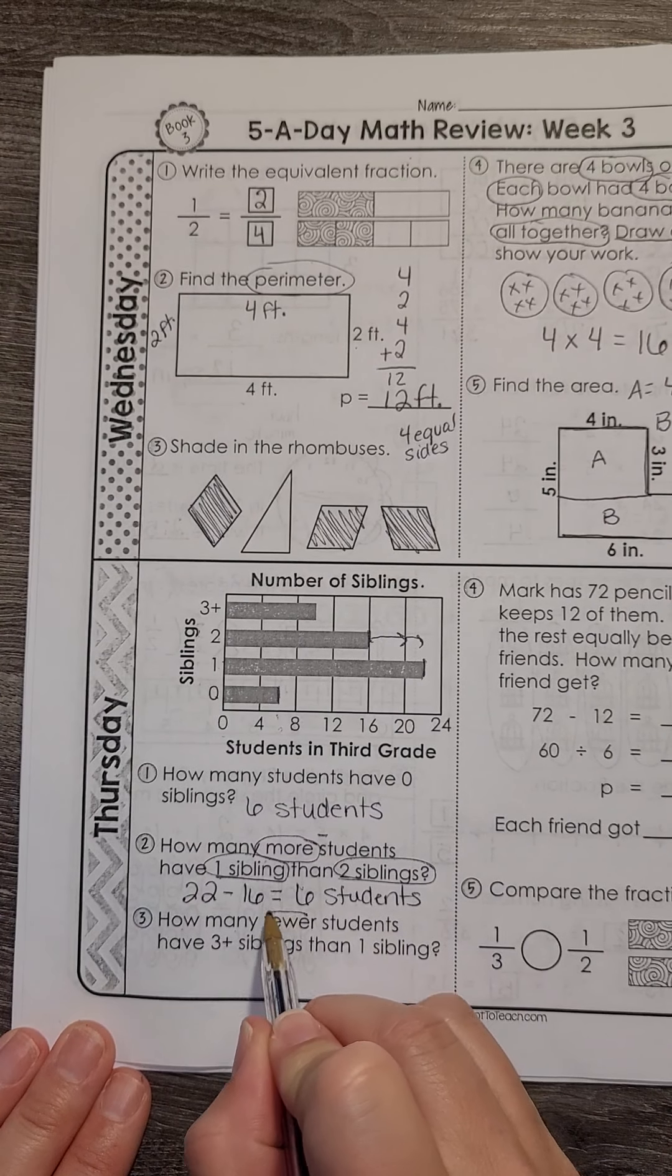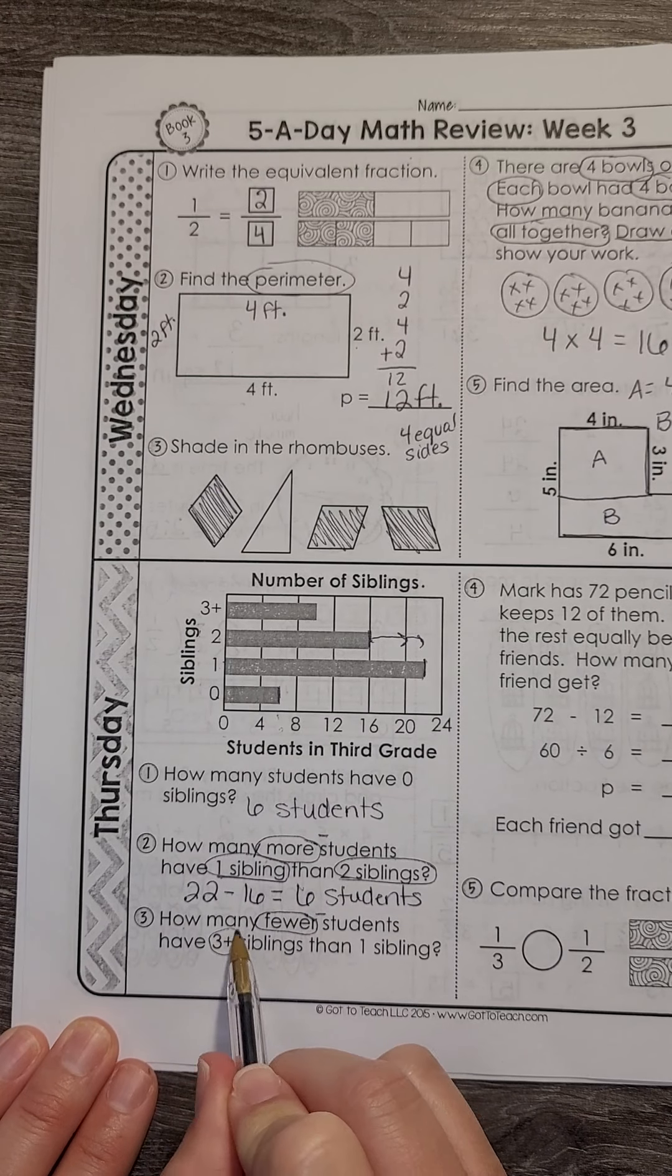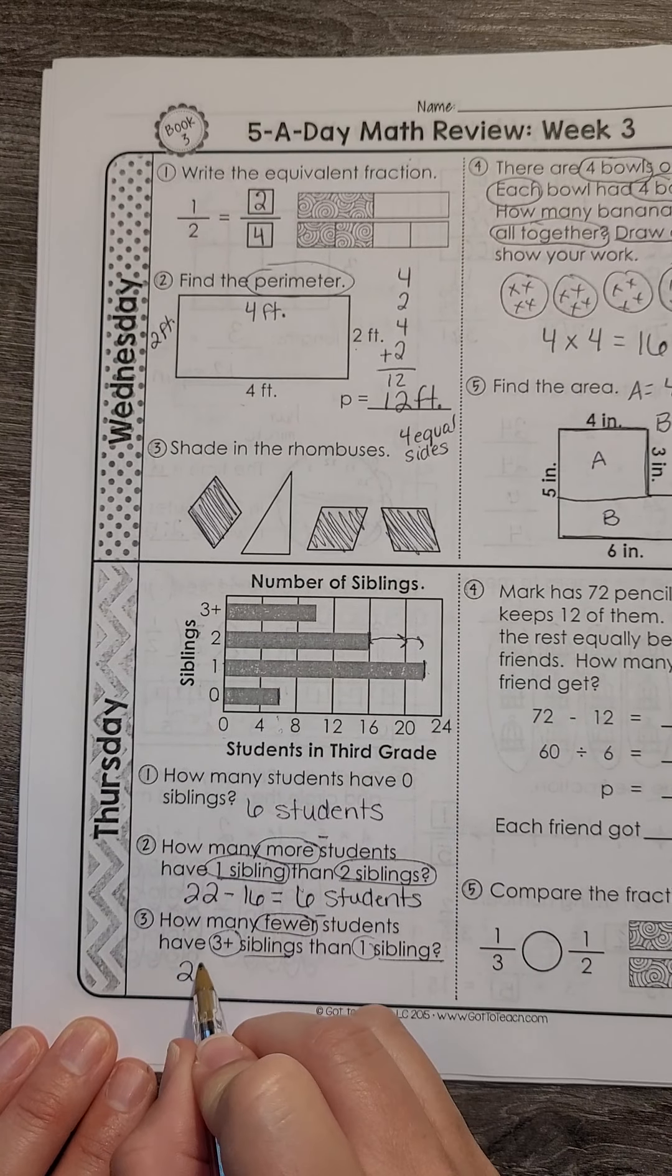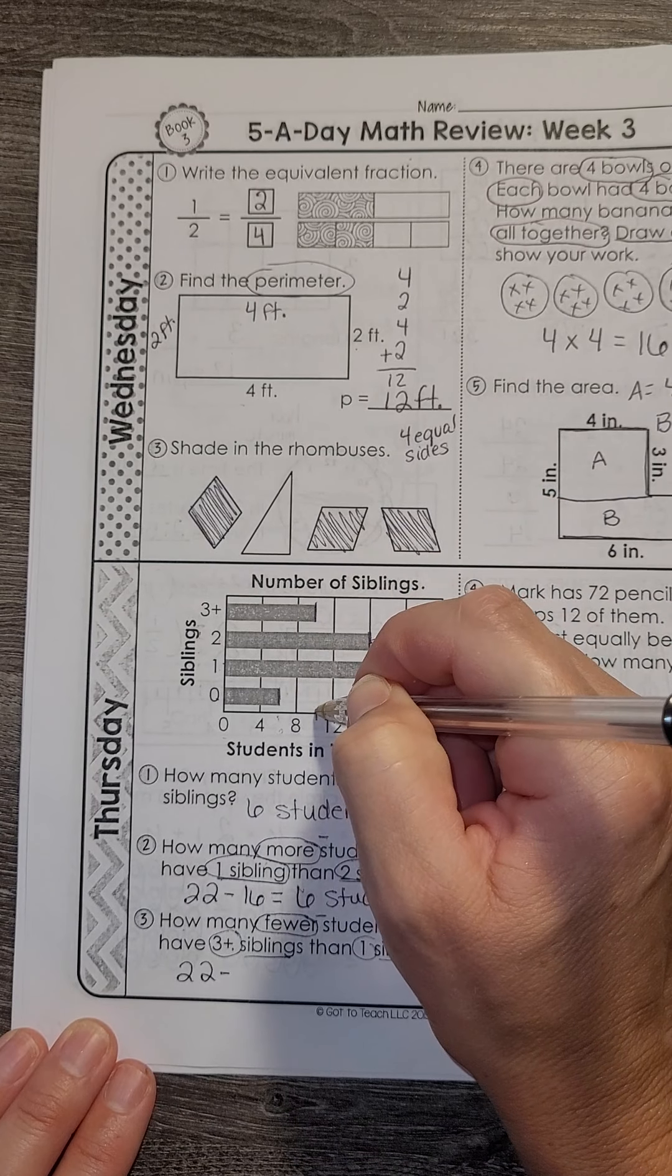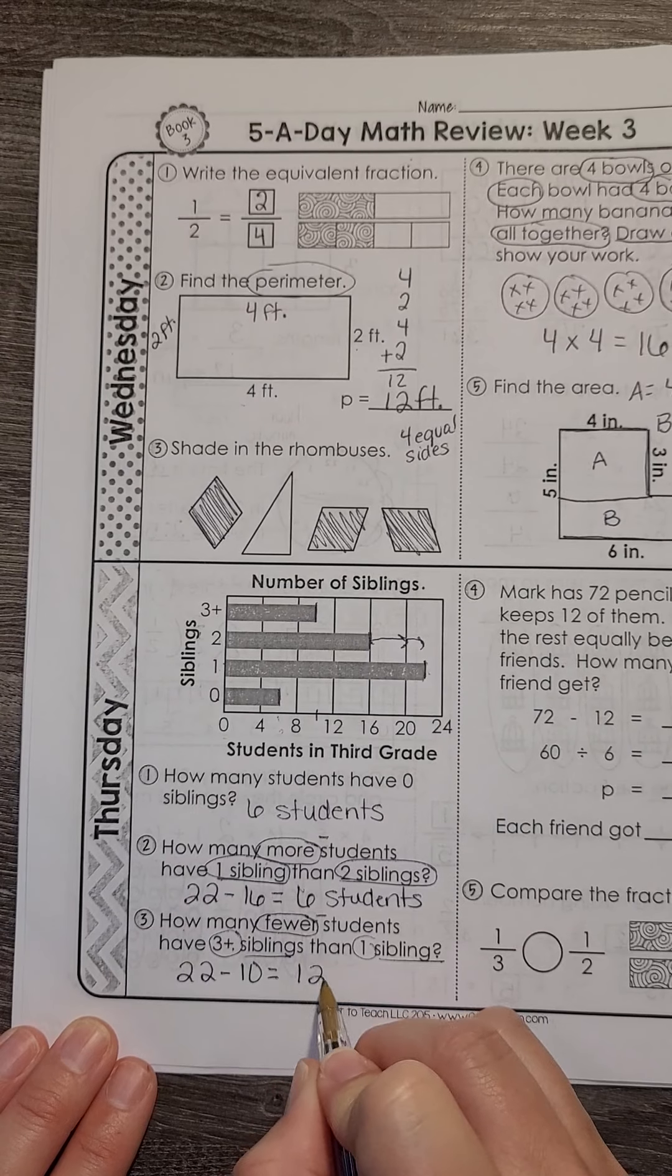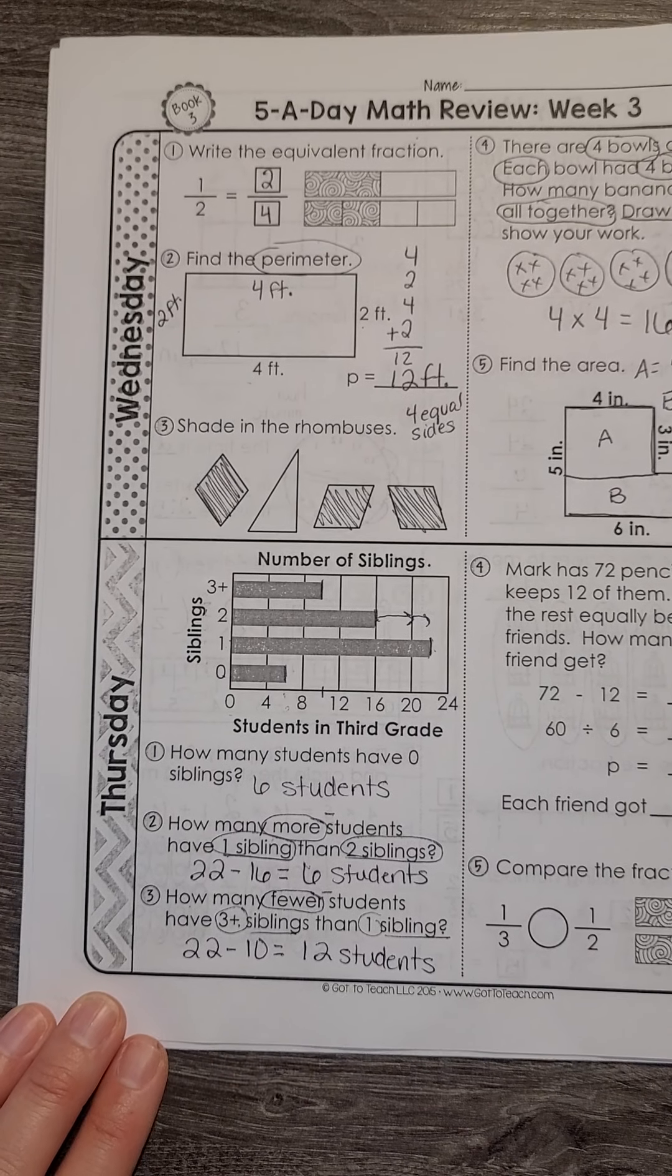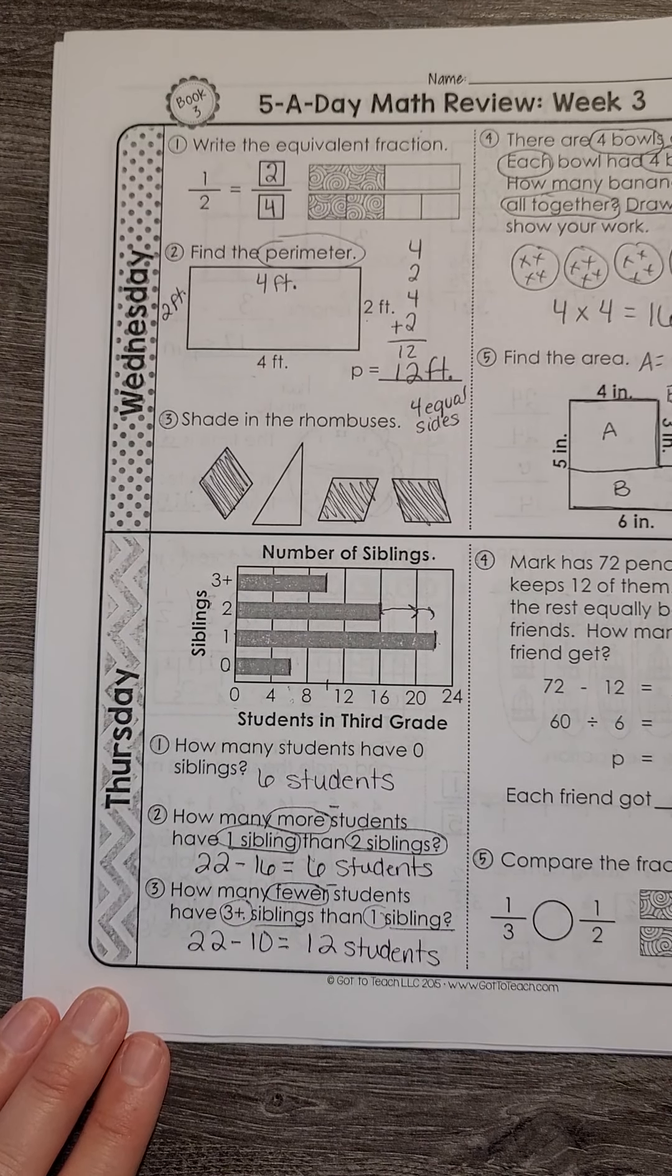How many fewer students, subtraction, have three plus siblings than one sibling? So we know one sibling is 22. We already figured that out. Three plus siblings is falling between eight and 12, which is 10. So when we subtract, we end up with 12 students. I should be seeing those things circled and your work on your paper.